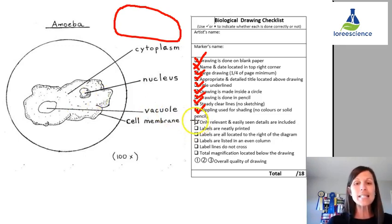Only relevant and easily seen details are included. So if you look around, only the things that were clearly visible, like there are no air bubbles put in there. They don't put their eyelashes in there. So they'll get their mark for that.